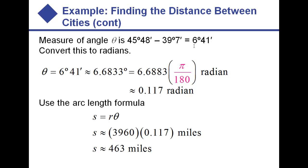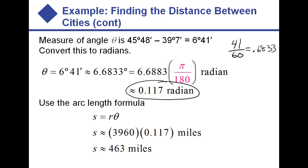Now we need to convert 6 degrees 41 minutes to a decimal for the radian conversion. The 41 minutes out of 60 gives 0.6833, so we have approximately 6.6833 degrees. Multiply by the conversion factor to get radians, then plug that in for theta and 3960 for the radius, and our answer comes out to roughly 463 miles apart.